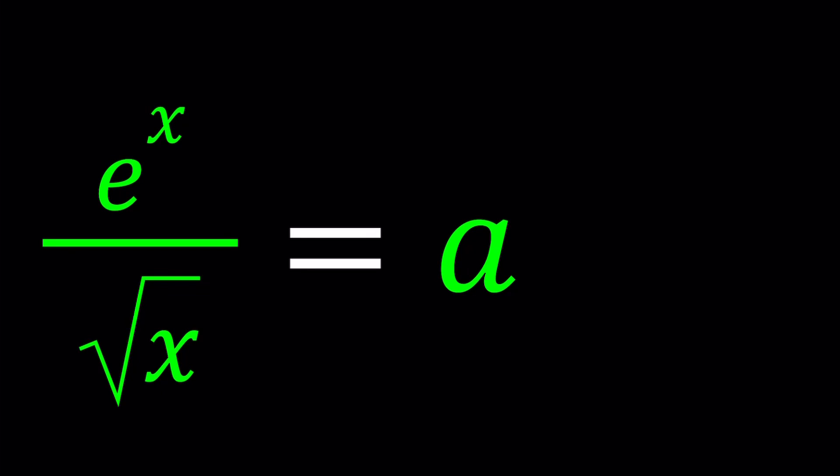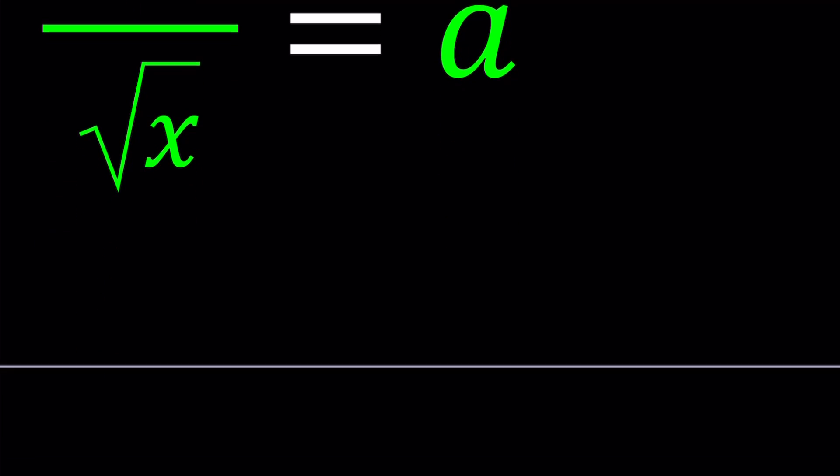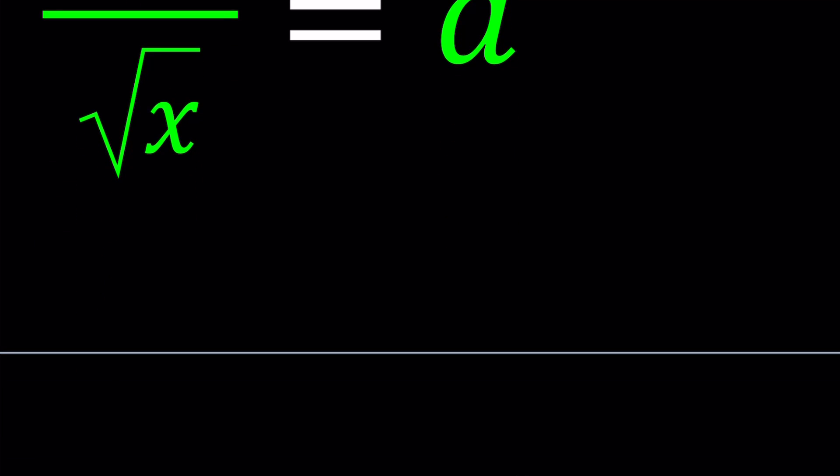Hello everyone. In this video we're going to be solving an interesting equation with a parameter. We have e to the power x divided by square root of x equals a. Here a is a given number and we want this equation to have one solution — so for which values of a this equation is going to have one solution is what we're going to explore.